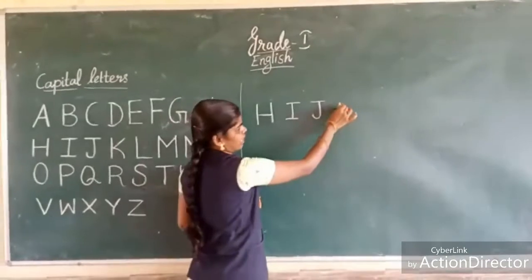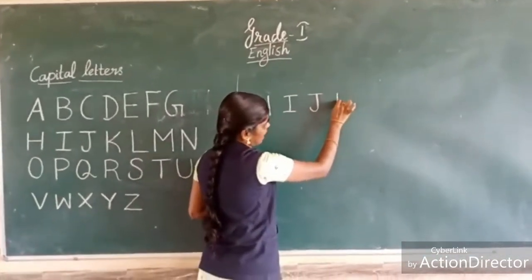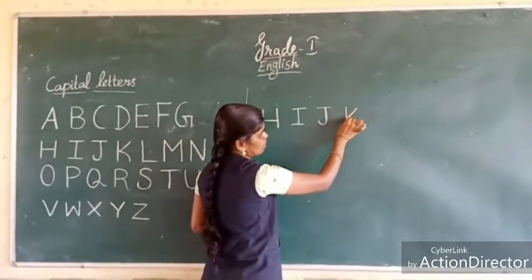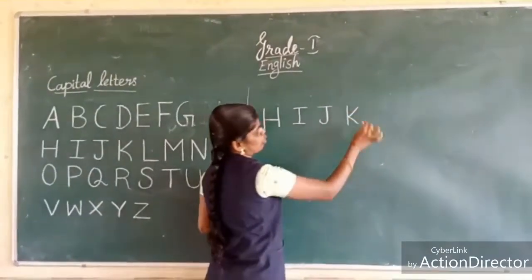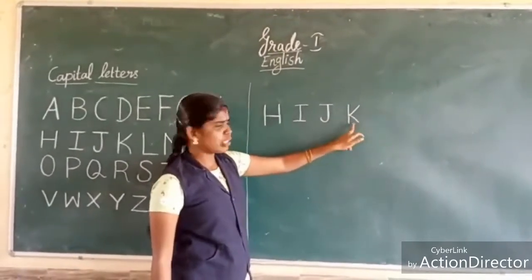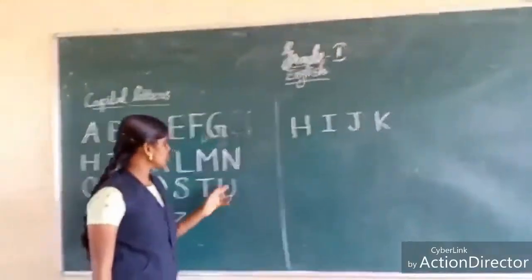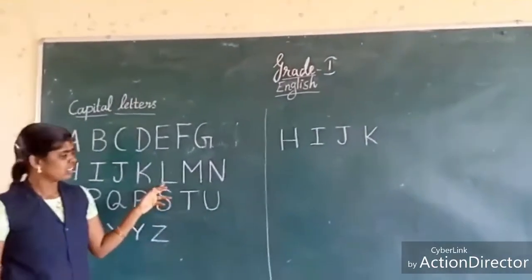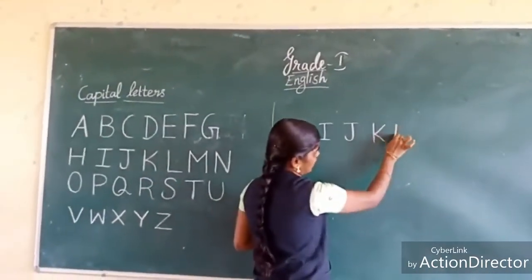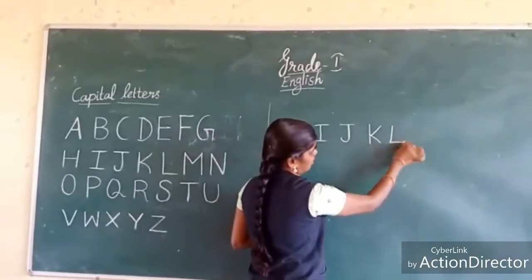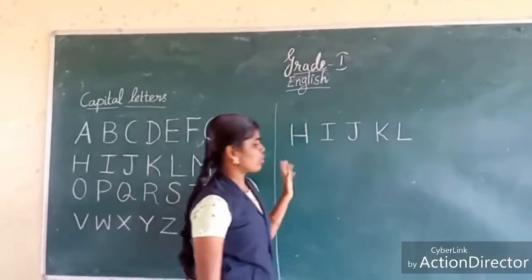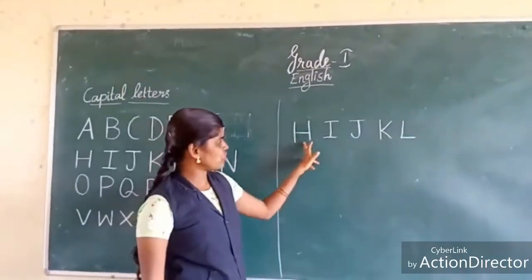Next, K. How do I write K? One standing line, one cross line going up, and another cross line going down. This is K. Next, L. One standing line and one sleeping line at the bottom. This is L.